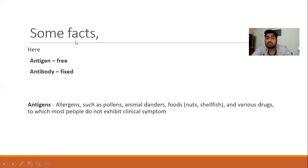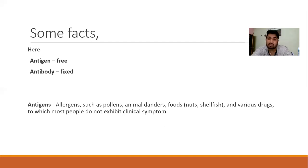Before discussing type 1 hypersensitivity, there are some facts. To develop hypersensitivity, the first two things we require are an antigen and an antibody. In type 1 hypersensitivity, the antigens should be free and the antibody must be fixed. The antigens that cause type 1 hypersensitivity are mainly allergens like pollens, animal danders, foods like nuts and shellfish, and various drugs — to which most people do not exhibit a clinical symptom. One of the most important drugs that develops type 1 hypersensitivity is penicillin.